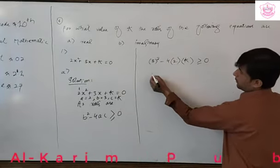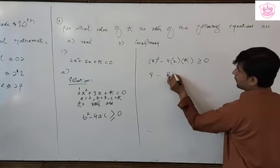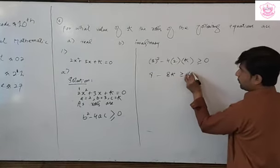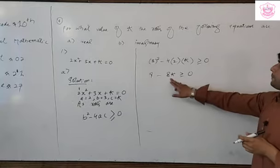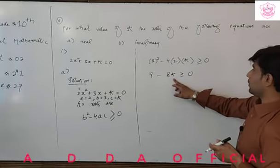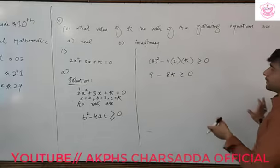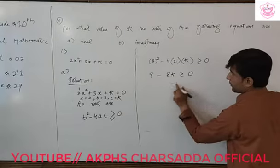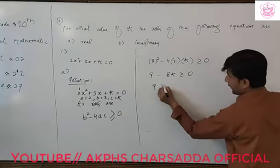3 squared means 3 multiplied by 3, which equals 9. Minus 4 times 2 is 8k, so we have 9 minus 8k greater than or equal to zero.